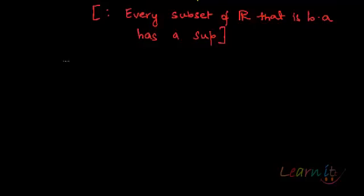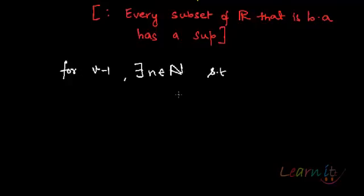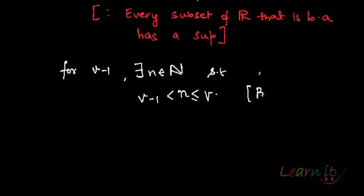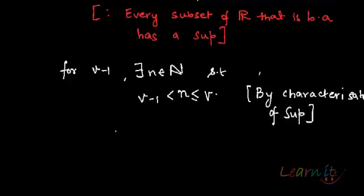Let's say the supremum is v. Now if v is a supremum, then if I look at the number v minus 1, for v minus 1 there exists an n belonging to ℕ such that n lies between v minus 1 and v. So: v minus 1 < n ≤ v. This comes by the characterization of the supremum.